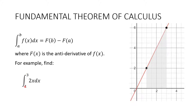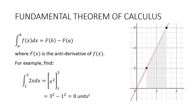For example, find the integral between 1 and 3 of 2x dx. This curve y equals 2x gives us a shaded area between the curve and the x-axis from x equals 1 to x equals 3. We find the antiderivative of 2x, which is x squared, put it in square brackets with limits 1 and 3, substitute 3 in minus substitute 1 in: 3 squared minus 1 squared equals 8 units squared. A simple trapezium area formula confirms this is true.